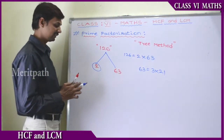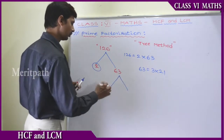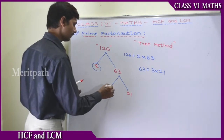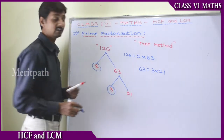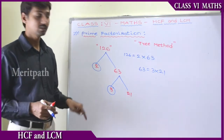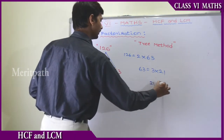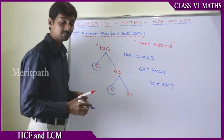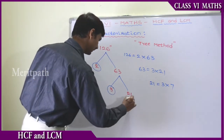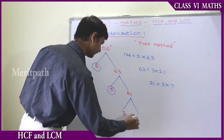63 can be written as 3 times 21 — so 3 into 21 is 63. Here 3 is a prime number and 21 is not a prime number. Of course, we need to take only prime numbers. 21 can be written as 3 into 7, and both of these are prime numbers. So 21 can be expressed as 3 into 7.